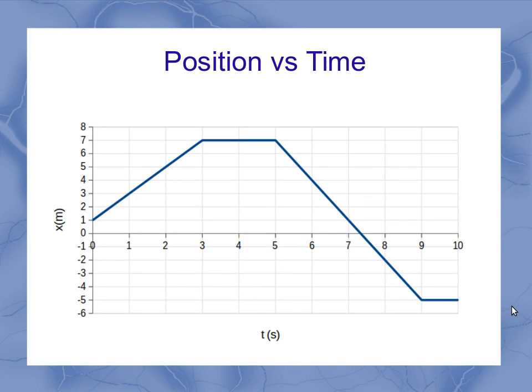We're going to start with a pretty simple position versus time graph here with just some straight line segments. I'll remind you that positive positions means you're in front of the reference point, and negative positions means you're behind the reference point.